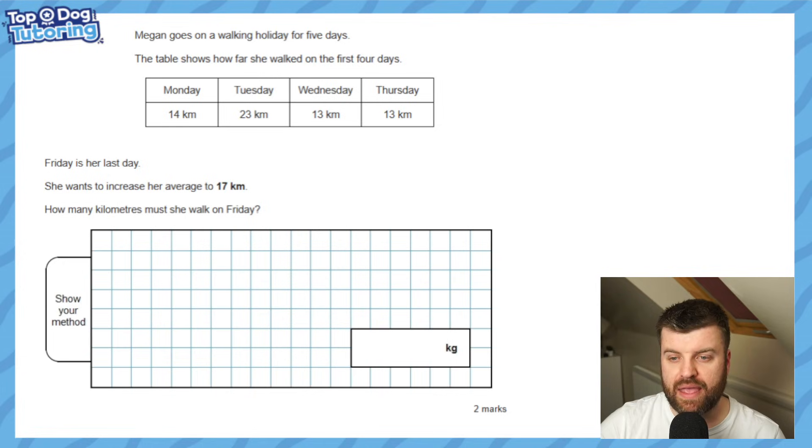Let's do one more together. Megan goes on a walking holiday for 5 days. The table shows how far she walked on the first 4 days. You've got to read this question really carefully - you can't just see 5 and think divide by 5. Friday is the last day. She wants to increase her average to 17 kilometers. How many kilometers must she walk on Friday? This is the ultimate tricky mean question because it's working backwards.